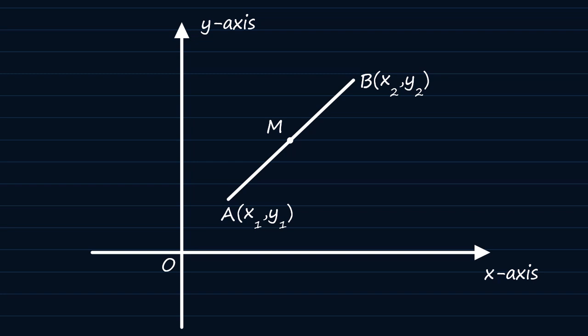The x-coordinate of M should lie halfway between x1 and x2, which can be expressed as x1 plus x2 all over 2.